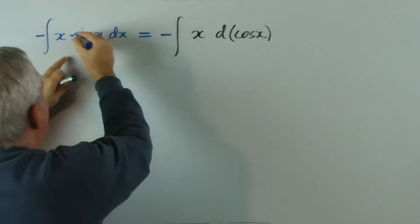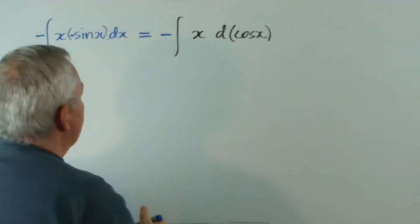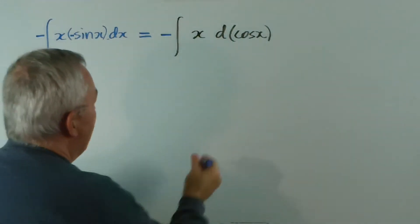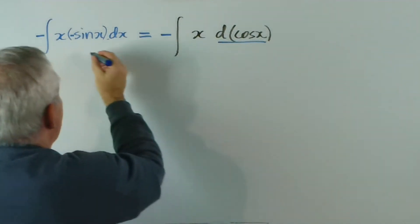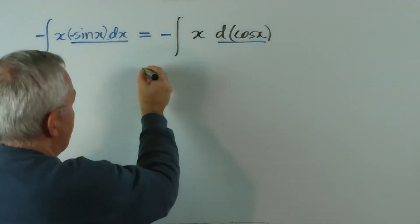This remains, but now this derivative here is, in fact, the derivative of cos. So, that matches that. And now we can perform our integration by parts.